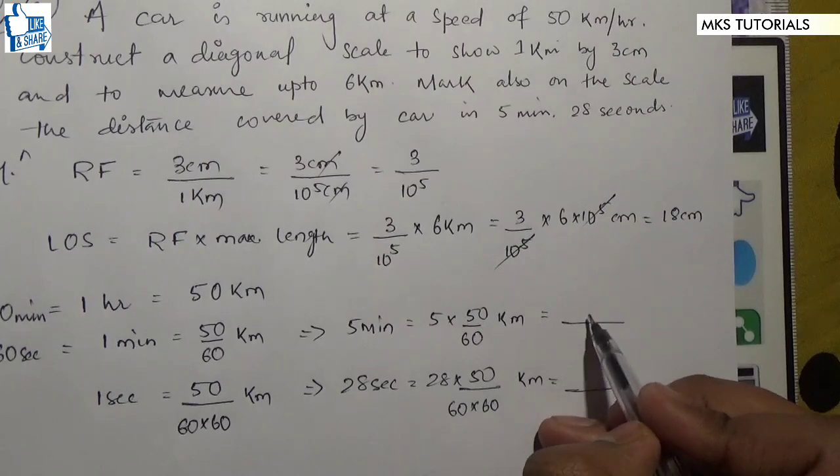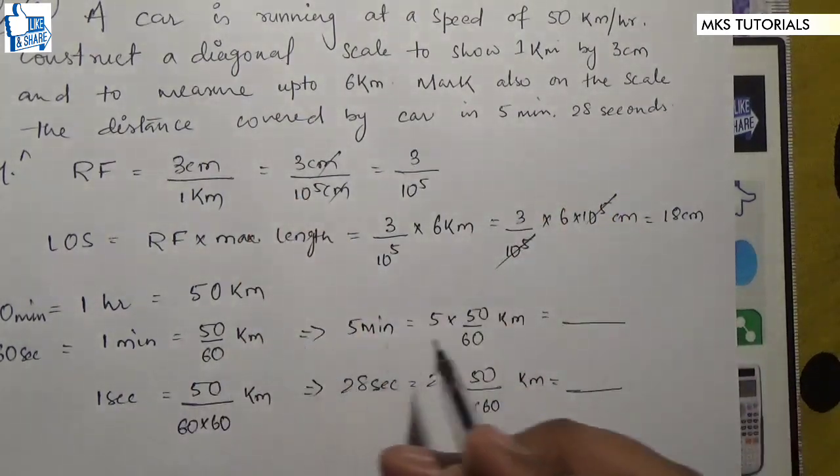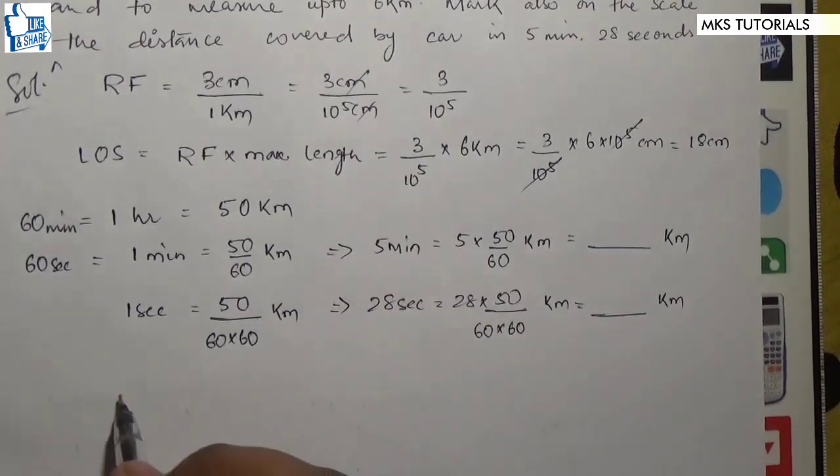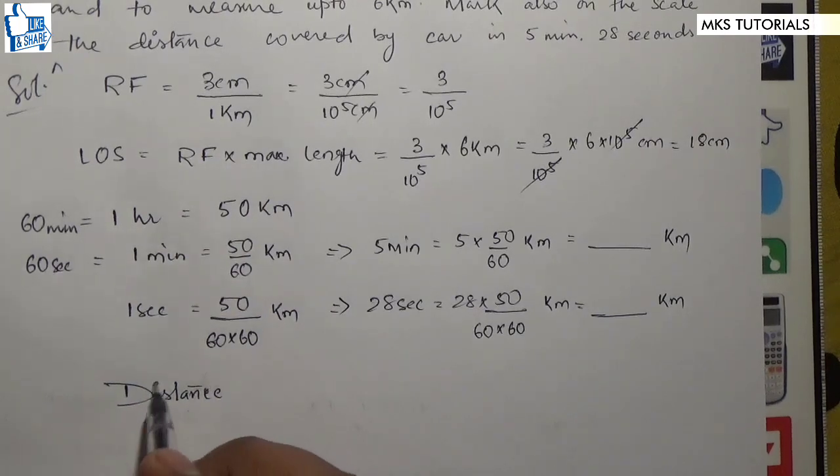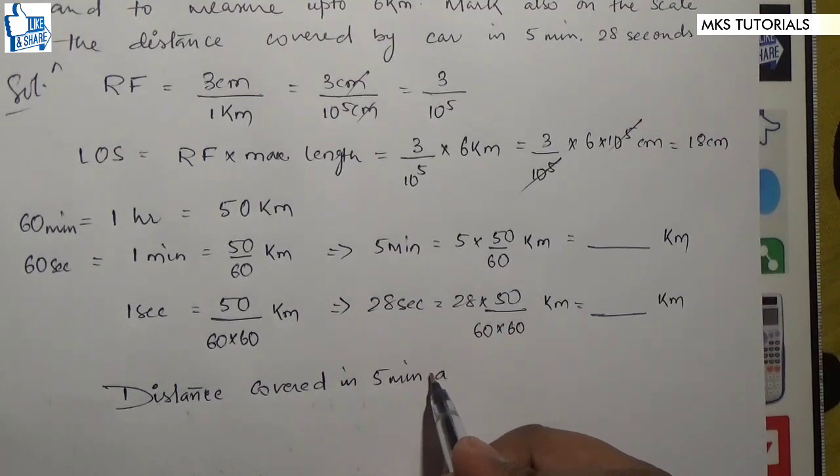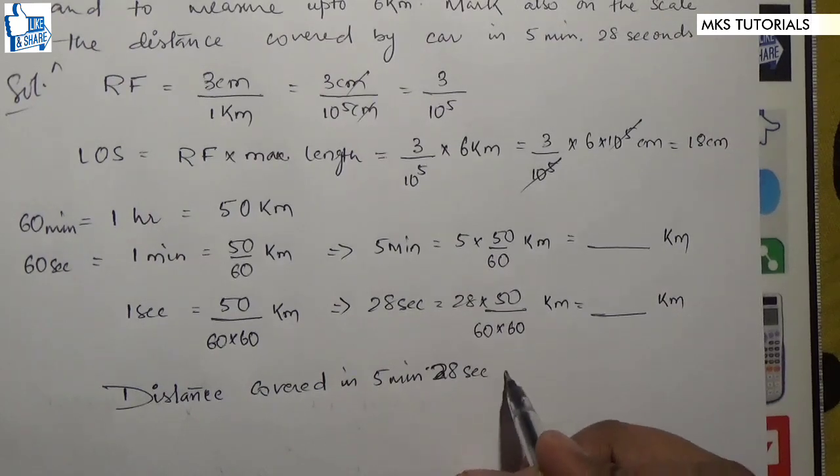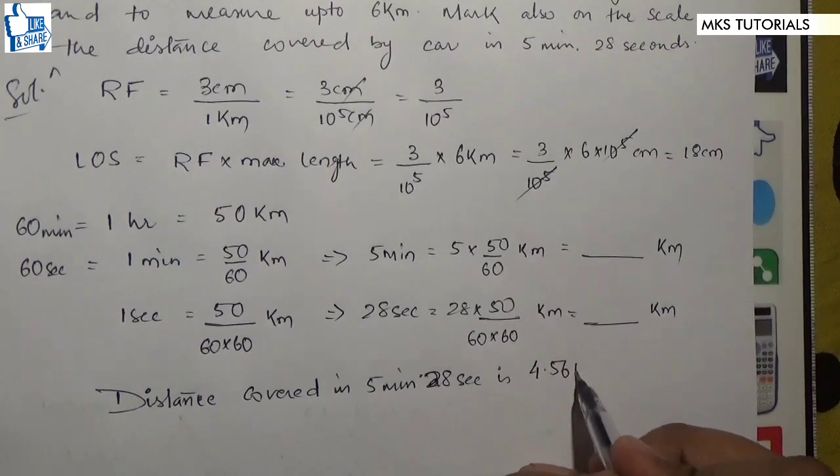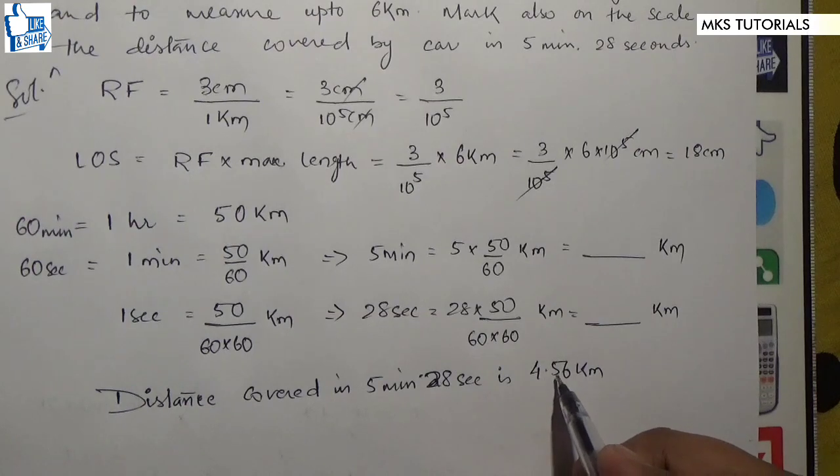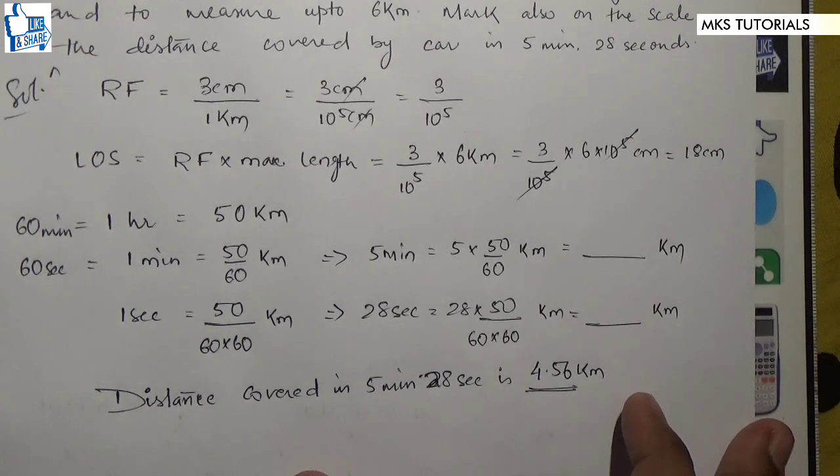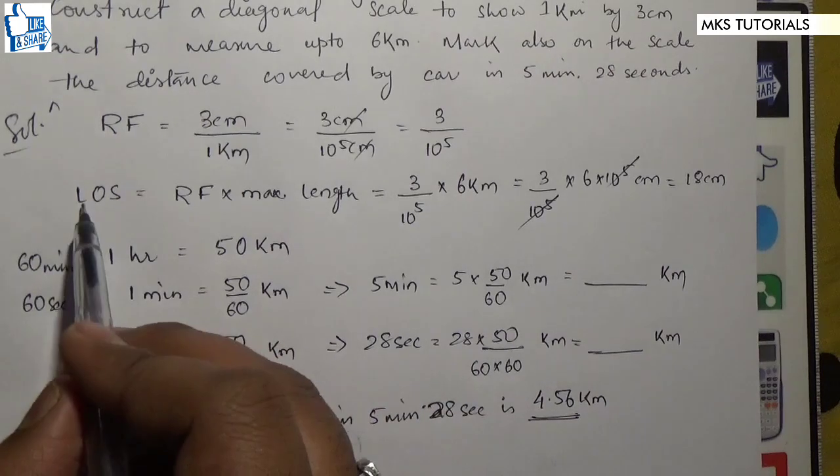Distance covered in 5 minutes and 28 seconds is distance around 4.56 km, distance around 4.58 km.